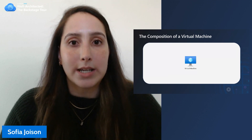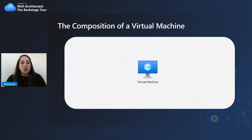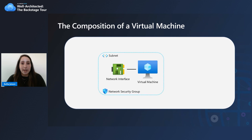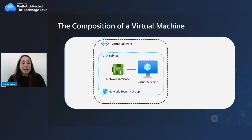Creating a virtual machine pretty much never means just a virtual machine by its lonesome. As we saw in Alex's presentation on ARM templates, creating a virtual machine includes the creation or use of many additional resources, some required and some only needed depending on your workload and goals. You have the network interface or the NIC, and this is the interconnection between the virtual machine and the virtual network. Then you have the network security group along with the subnet, and that subnet is part of a VNet.